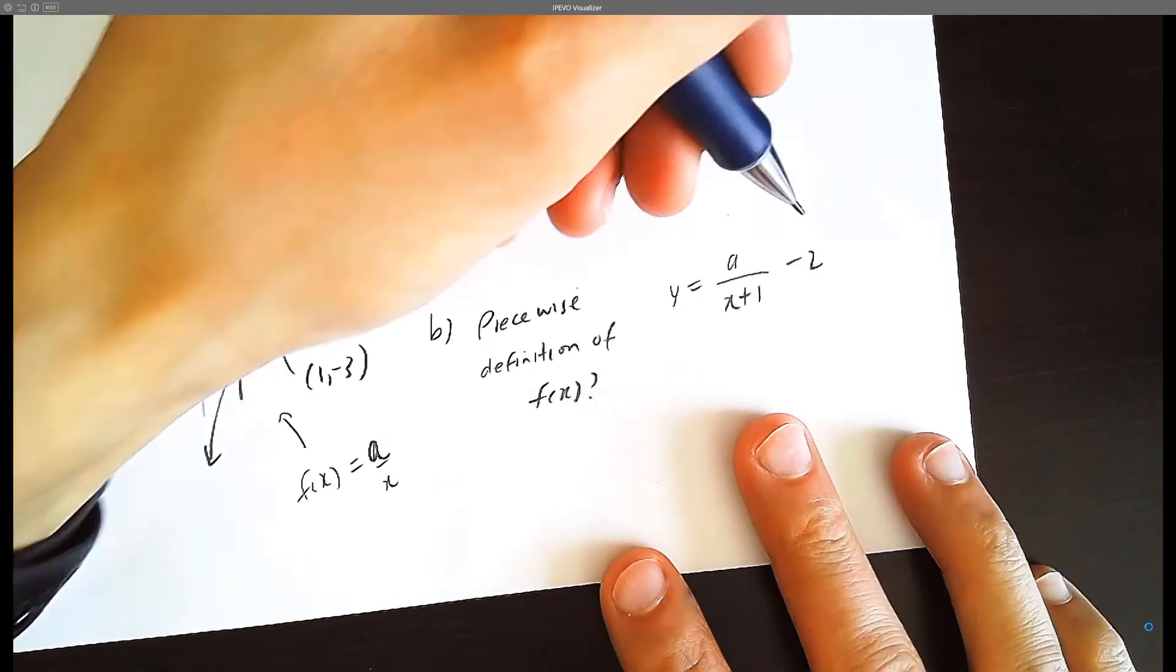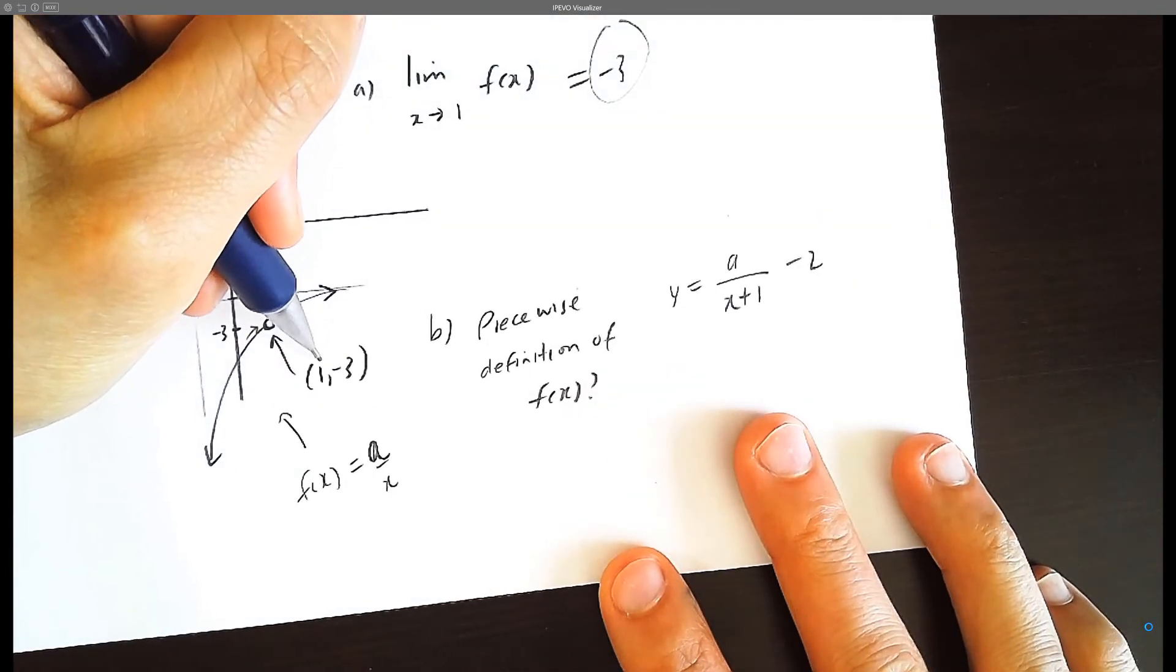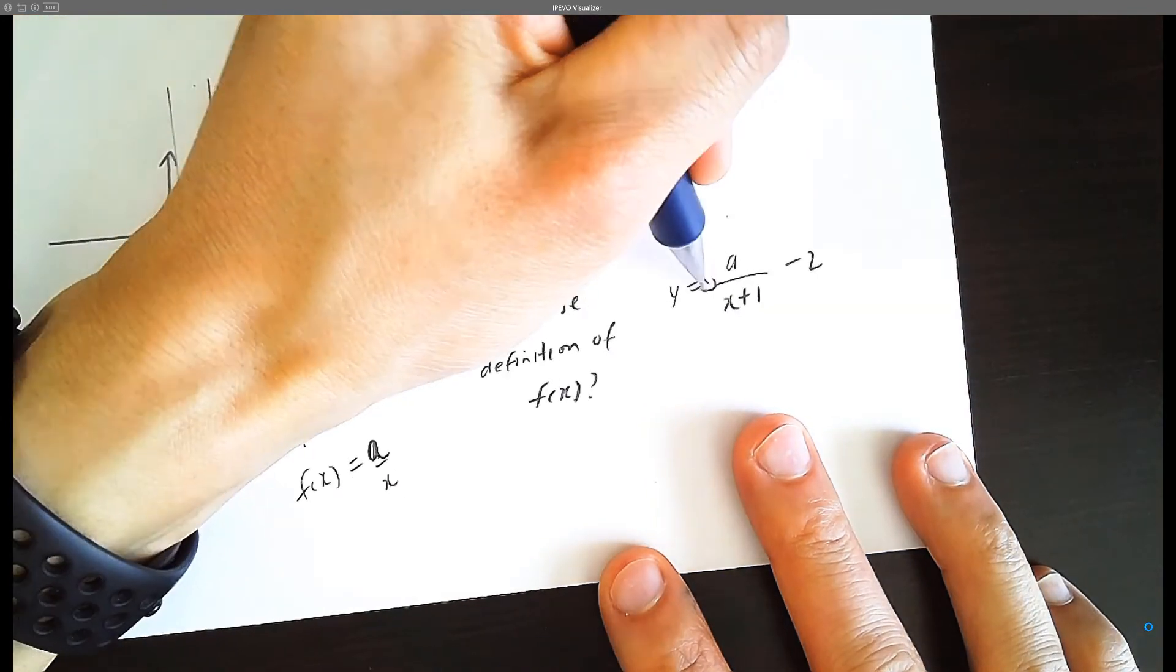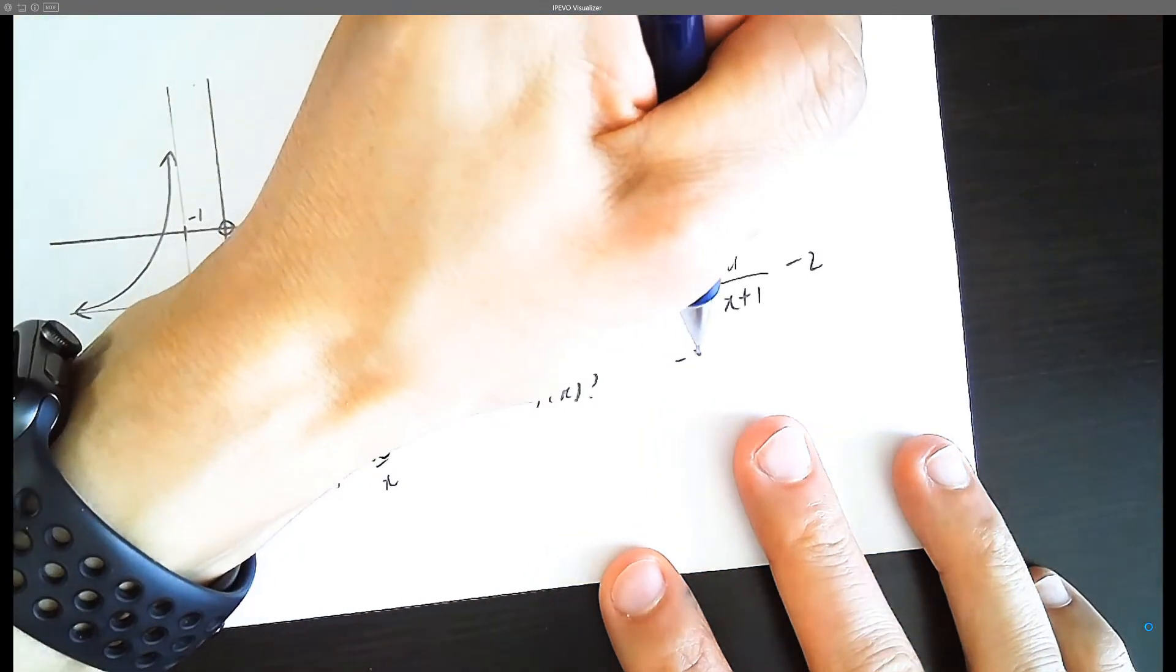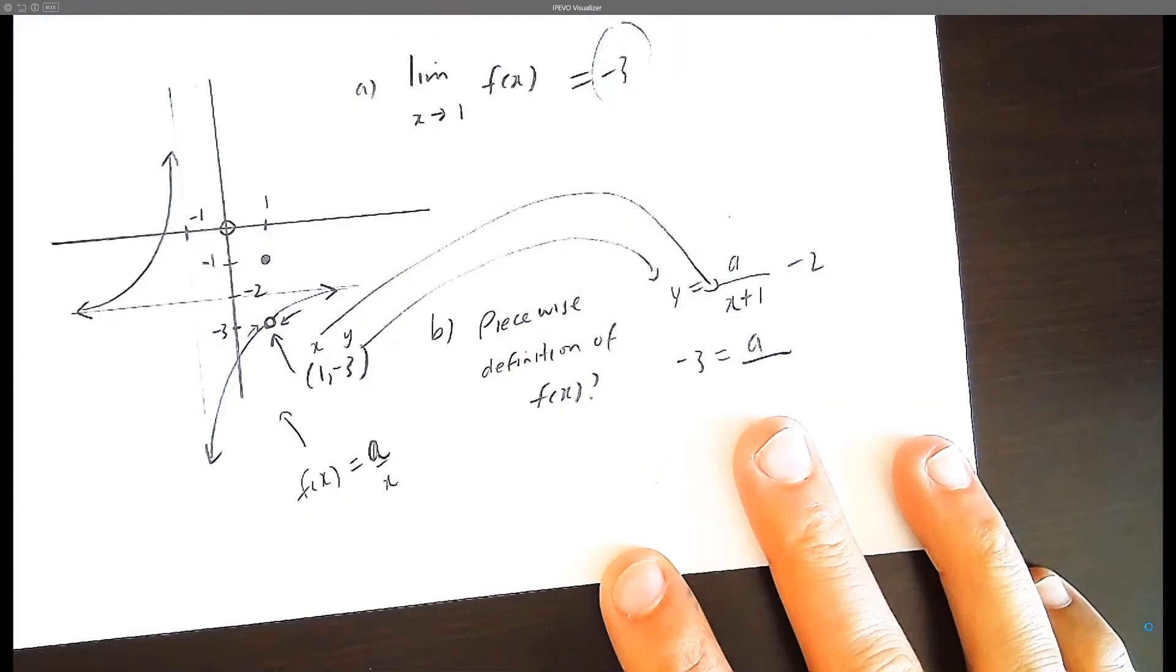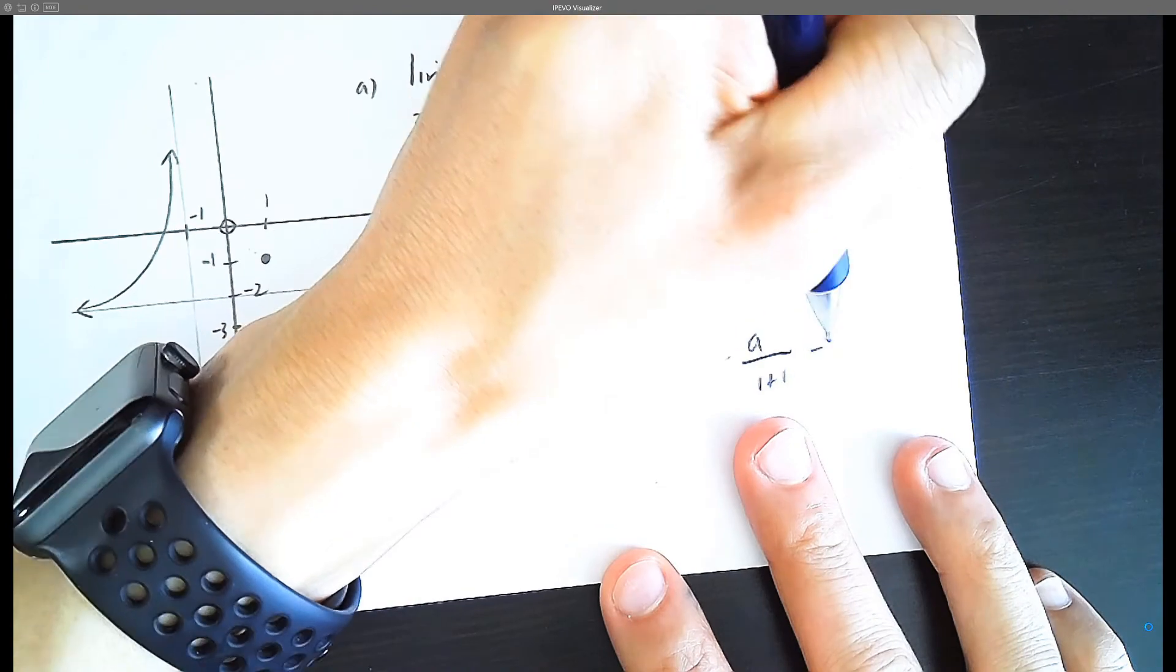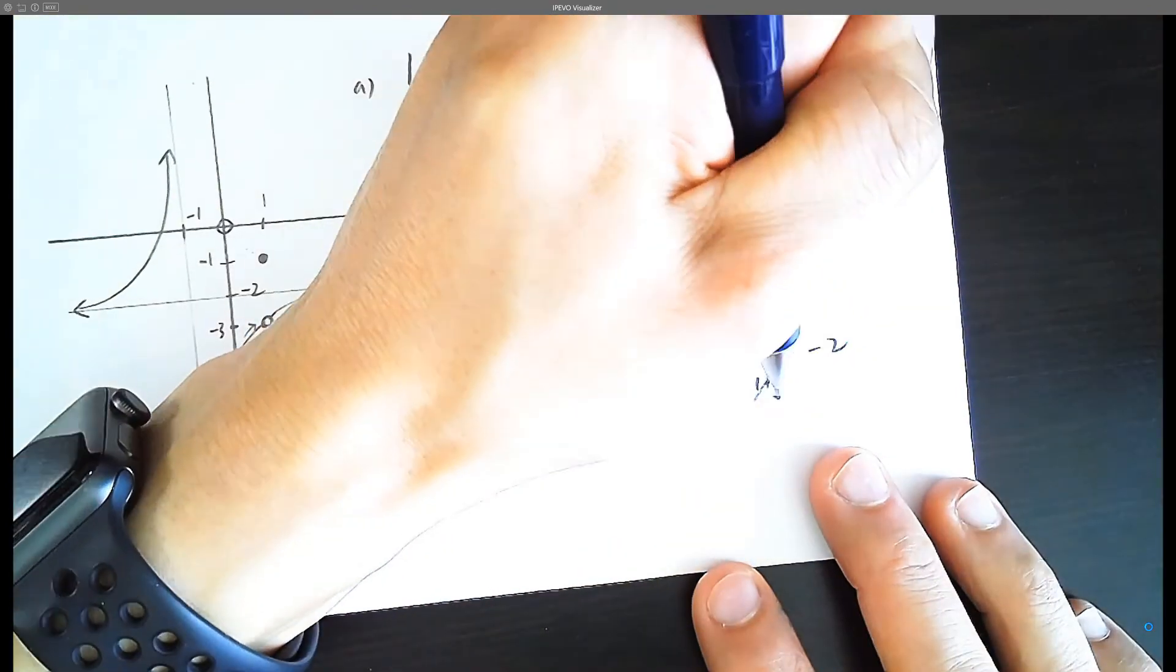So when you're not sure what the actual function is, let's substitute x and y. x here is 1 and y here is negative 3. So negative 3 is equal to a over 1 plus 1 minus 2. So this becomes a over 2.